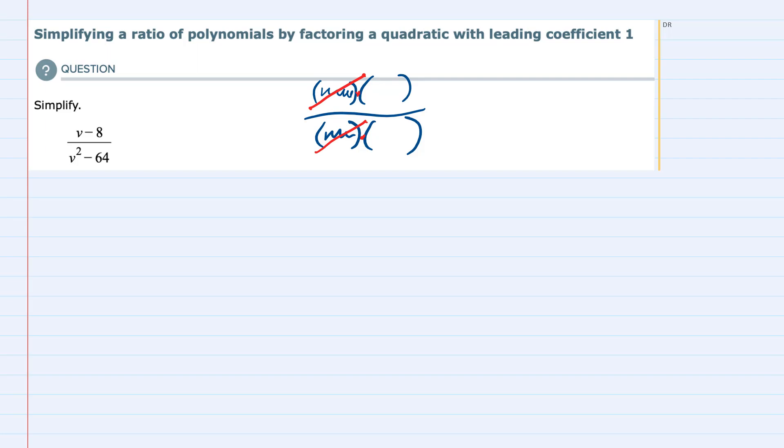In this expression however I have addition and subtraction in between, so looking at the numerator there's nothing that I can do to factor v minus 8. They don't have a common term that I can factor out, so I'm just going to rewrite that v minus 8.